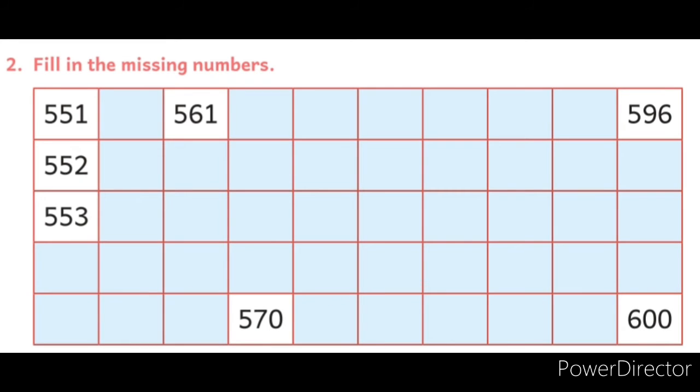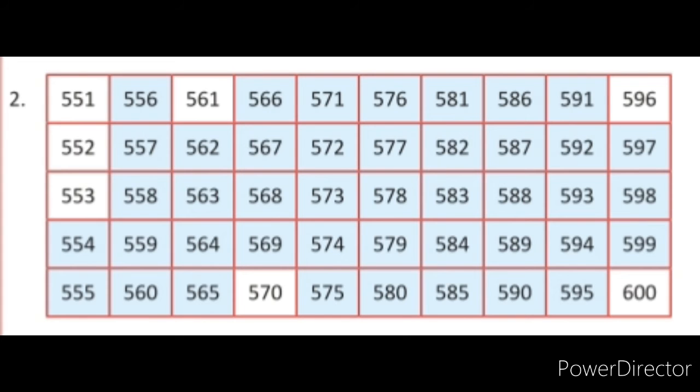Question No. 2 में हमें 100 grid दिया गया है, यहाँ 551 से counting start है और 600 पर counting का end किया गया है. So, complete the missing numbers like this on your practice book.